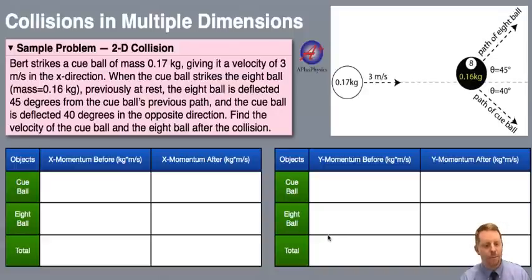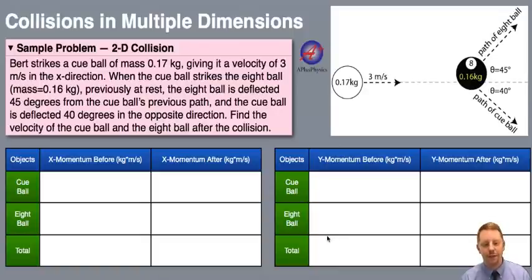In this problem, Burt strikes a cue ball of mass 0.17 kilograms, giving it a velocity of 3 meters per second in the x direction. When the cue ball then strikes the 8 ball of mass 0.16 kilograms, previously at rest, the 8 ball is deflected 45 degrees from the cue ball's previous path. The cue ball is deflected 30 degrees in the opposite direction. Find the velocity of the cue ball and the 8 ball after the collision.